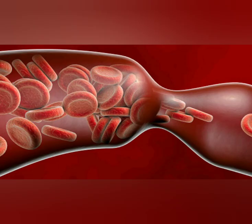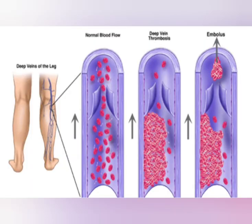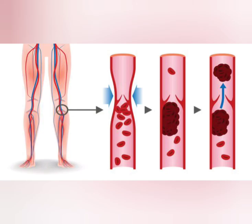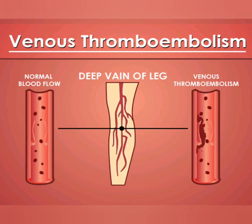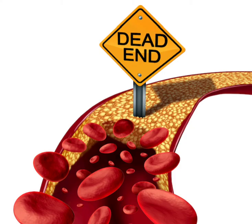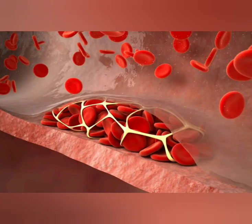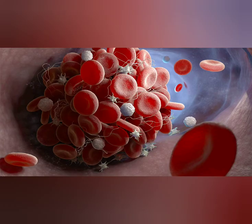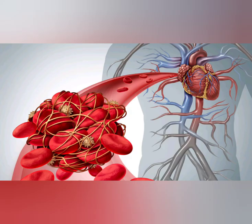If you suspect a dangerous blood clot, see your doctor, who will ask about your signs and symptoms and examine you. Remember: if you have pain, swelling, redness, or warmth in one leg, or if you have trouble breathing, chest pain, fast heartbeat, dizziness, syncope, or if you cough up blood, see your doctor or call 911 immediately.